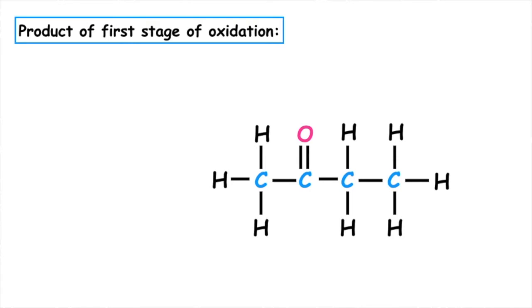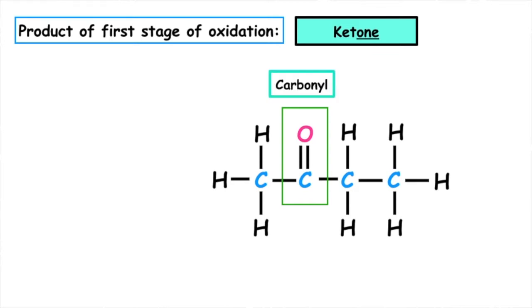So the product of the first stage of oxidation of a secondary alcohol will produce a ketone. The name of the functional group which can be found in here, which is our C double bond O, is known as the carbonyl functional group.